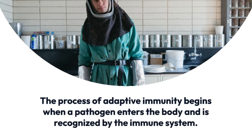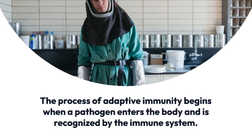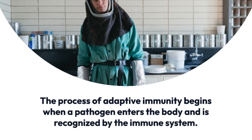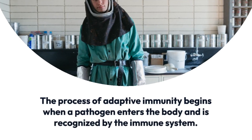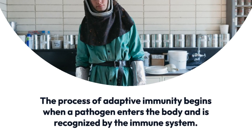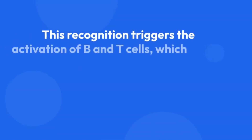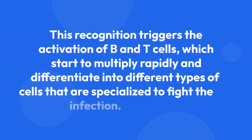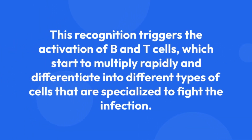The process of adaptive immunity begins when a pathogen enters the body and is recognized by the immune system. This recognition triggers the activation of B and T-cells, which start to multiply rapidly and differentiate into different types of cells that are specialized to fight the infection.